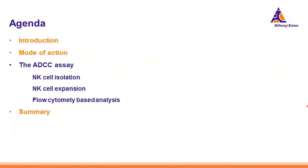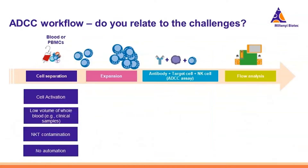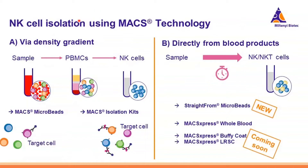I will dive into the assay and how to isolate, expand, and analyze the NK cells. The challenges regarding NK cell isolation include the fear that you activate your cells during isolation, contamination risks, or working with very low volumes of starting material. At Miltenyi Biotec, we have different ways to separate NK cells: pre-isolation of PBMCs with density gradient centrifugation followed by specific NK cell isolation, either with CD56 microbeads for positive isolation or with an NK cell isolation kit for untouched isolation.